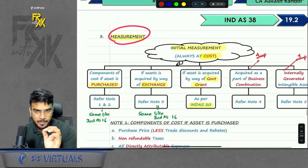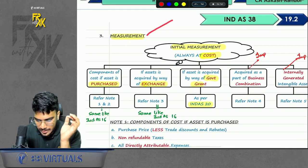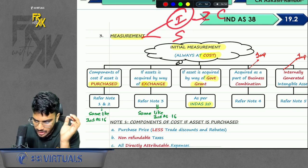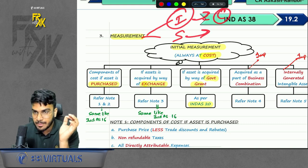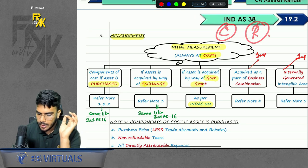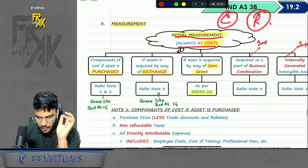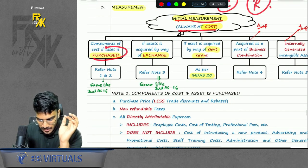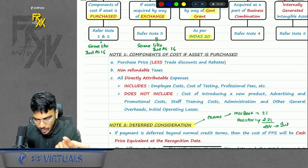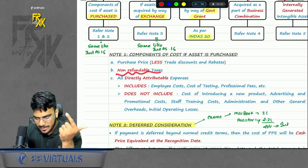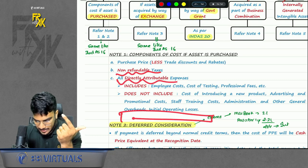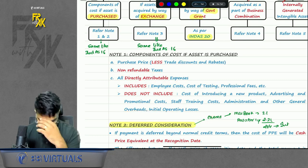Next point is measurement. We have two criteria: initial measurement and subsequent measurement. Initial measurement — always, always at cost. Subsequent measurement — we have two models: cost or revaluation. For initial measurement, if the asset is purchased, it is the same as Ind AS 16: purchase price less trade discount, plus non-refundable taxes and all direct capital expenses. There is no point of decommissioning because there is no physical substance in an intangible asset.